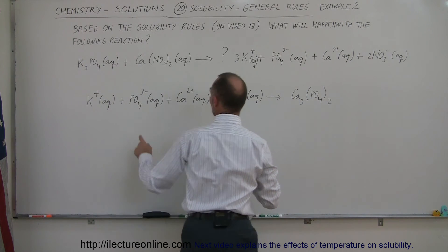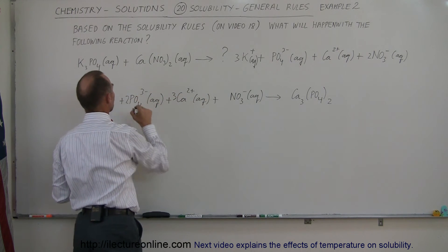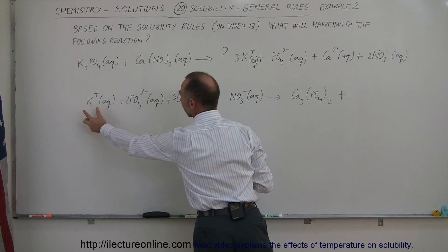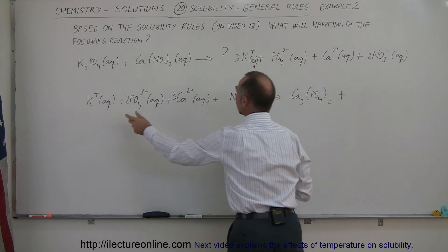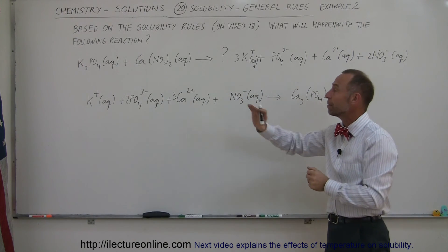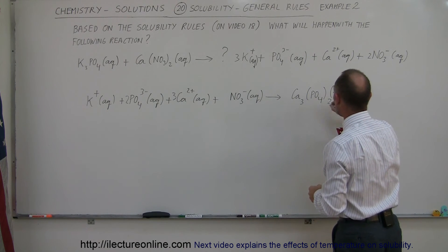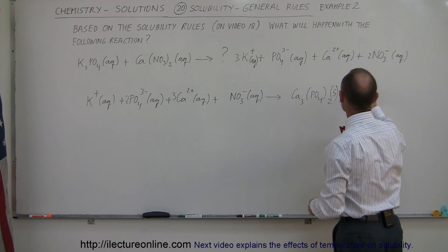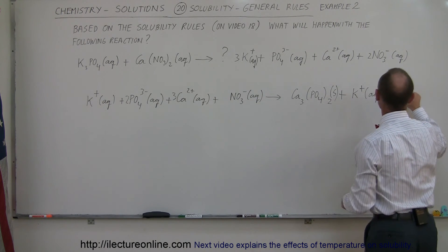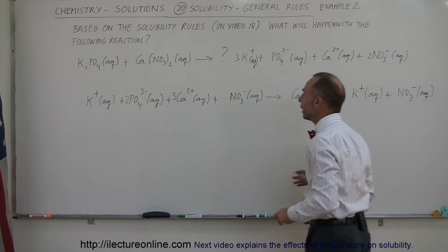So if we need three calciums, we put a three in front, and two phosphate ions, we put two of those. Then we have what we call the two spectator ions in this reaction. The potassium will just remain in solution, and the nitrate ion will just remain in solution, and will not react at all. So we still have the potassium ion in aqueous solution, plus the nitrate ion NO3- in aqueous solution, and those are not going to do anything at all.